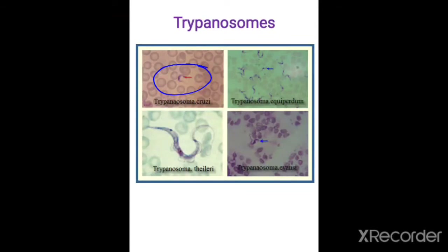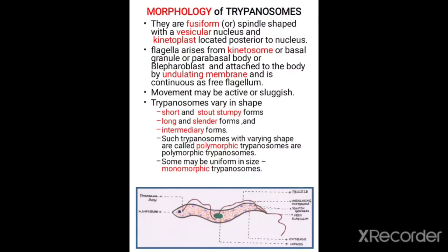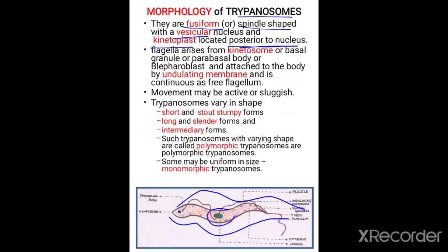Examples include Trypanosoma cruzi, Trypanosoma equiperdum, Trypanosoma theileri, and Trypanosoma evansi. Now let us come to the morphology of Trypanosomes. They are fusiform or spindle-shaped, having a vesicular nucleus and a kinetoplast located posterior to the nucleus. In this image, you can clearly appreciate the spindle-shaped structure with the vesicular nucleus and the kinetoplast posterior to it. The flagella arises from the kinetoplast, also called basal granules.